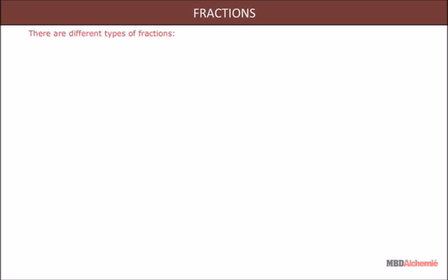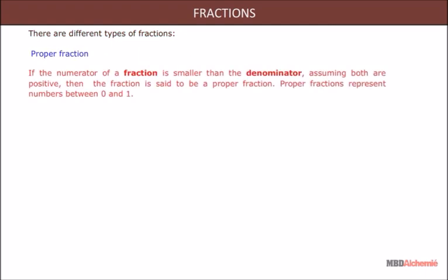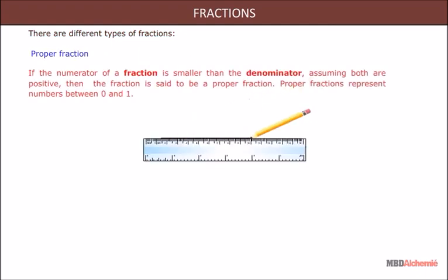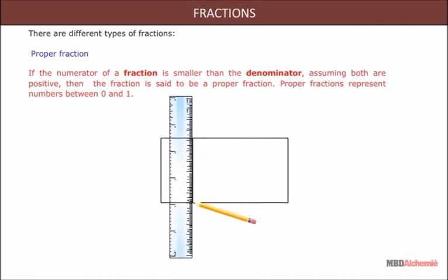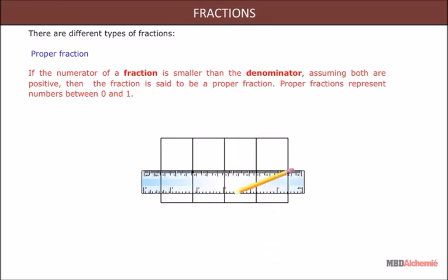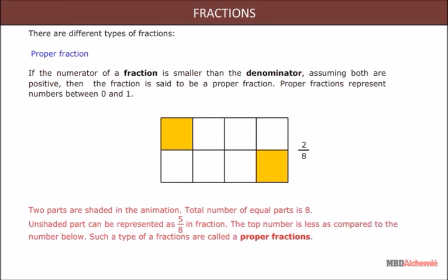There are different types of fractions. Proper fraction: if the numerator of a fraction is smaller than the denominator, assuming both are positive, then the fraction is said to be a proper fraction. Proper fractions represent numbers between 0 and 1. Two parts are shaded in the animation; the total number of equal parts is 8. The unshaded part can be represented as 5/8 — the top number is less than the number below. Such fractions are called proper fractions.